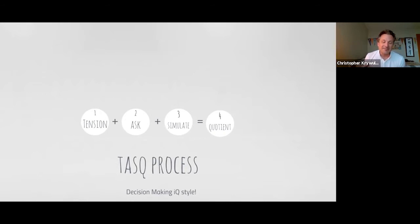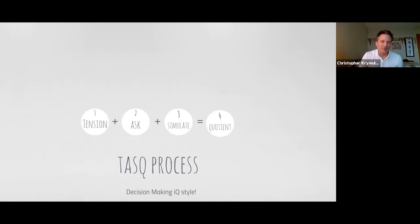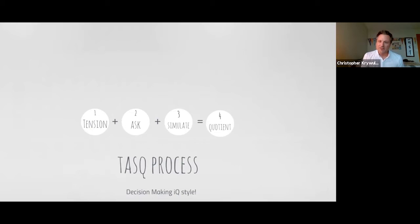Little did I know, the feeling inside me was leading to an important decision in my life. Introducing the TASK decision-making process — the process I've actually been using; I've just now really decoded it. There are four steps to TASK: the first step is Tension, the second is Ask, the third is Simulate, and the fourth is Quotient.